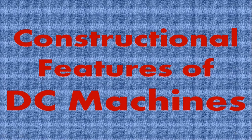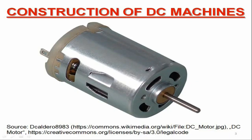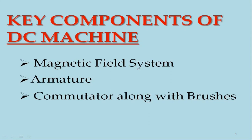After completion of this lecture, you may be able to explore the constructional details of a practical DC machine. It is well known that any DC machine can be operated either as a generator or as a motor, so the construction of a DC generator and that of a DC motor are essentially the same. As far as the constructional details are concerned, DC machines have three key components — the magnetic field system, the armature, and the commutator along with brushes.